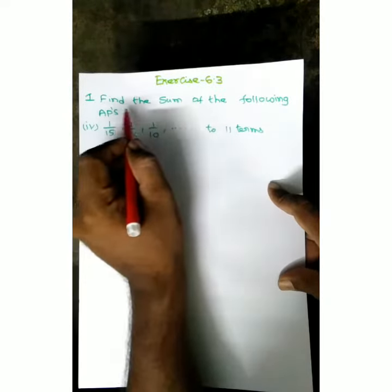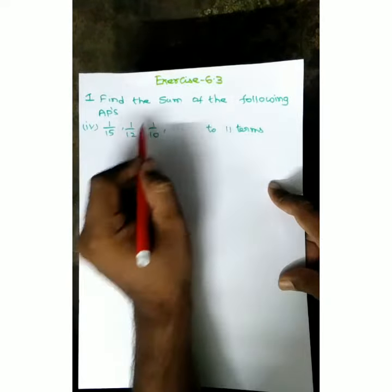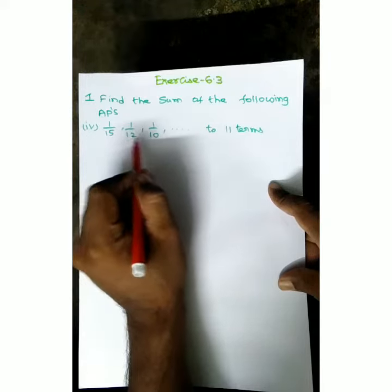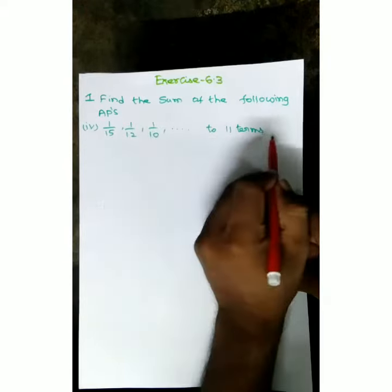One more exercise is 6.3, first question. Find the sum of the following APs: 1 by 15, 1 by 12, 1 by 10 up to 11 terms.